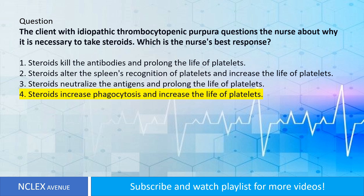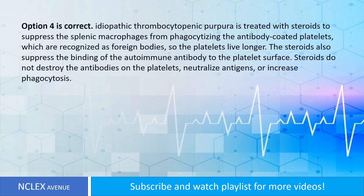Answer. Option 4 is correct. Idiopathic thrombocytopenic purpura is treated with steroids to suppress the splenic macrophages from phagocytizing the antibody-coated platelets, which are recognized as foreign bodies, so the platelets live longer. The steroids also suppress the binding of the autoimmune antibody to the platelet surface. Steroids do not destroy the antibodies on the platelets, neutralize antigens, or increase phagocytosis.